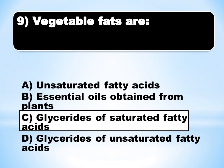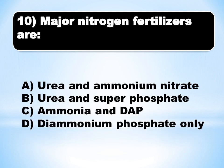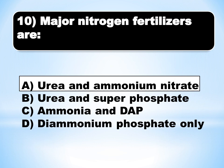This is an important question. MCQ number 10: Major nitrogen fertilizers are. From chapter number 15, the answer is A (alpha): urea and ammonium nitrate.